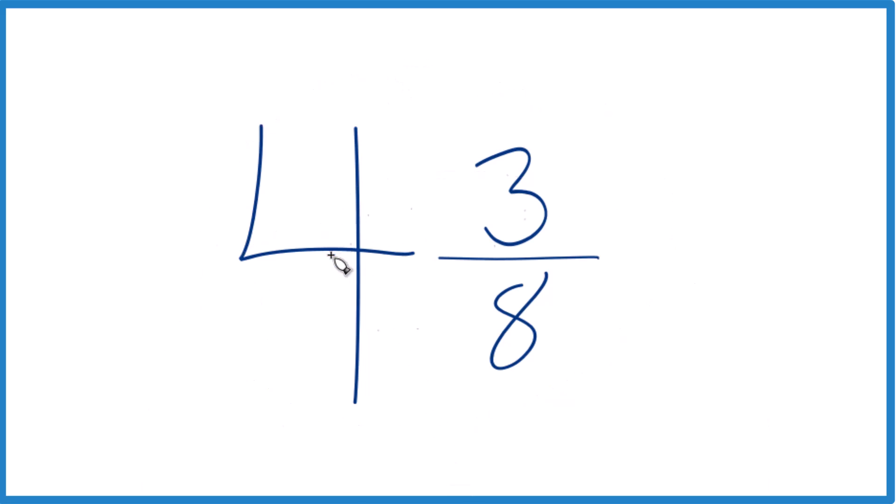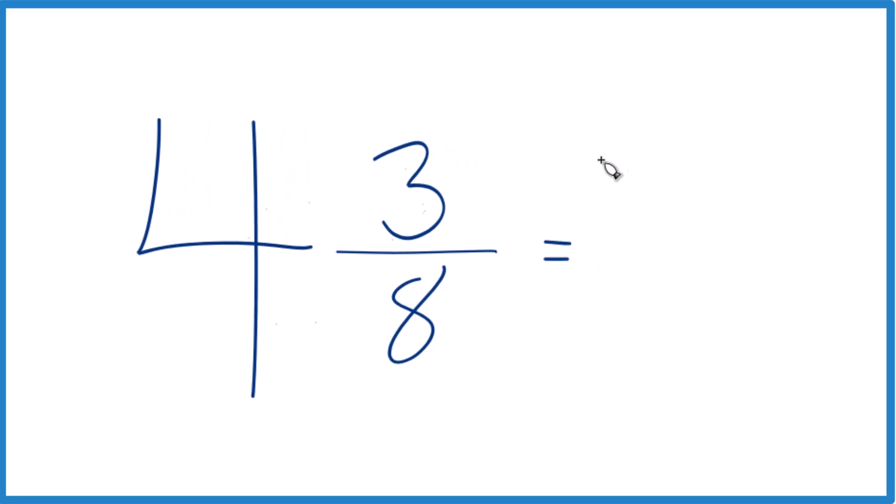You take the whole number, that's the 4, and then you multiply that by 8. 4 times 8 is 32, and 32 plus 3, that gives us 35.